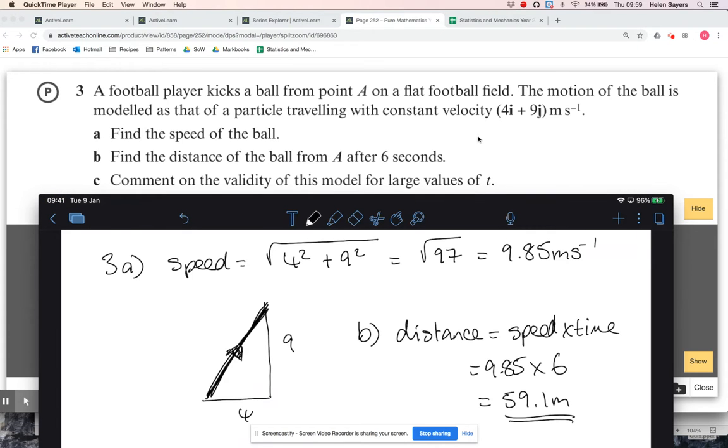So, you know, things like air resistance are going to slow it down, friction from the grass, it might hit a lump, another player might intersect it. It's just highly unlikely and not possible that it will travel with that constant velocity forever.